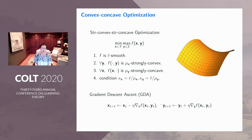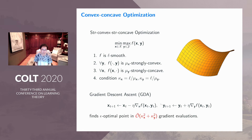A classical algorithm used in this scenario is a direct generalization of gradient descent called gradient descent ascent. Basically, the min player does gradient descent while the max player does gradient ascent. It turns out that by running this algorithm, you find an epsilon-optimal point in O-tilde(kappa_x^2 + kappa_y^2) gradient evaluations, which is significantly worse than gradient descent in the minimization setting.